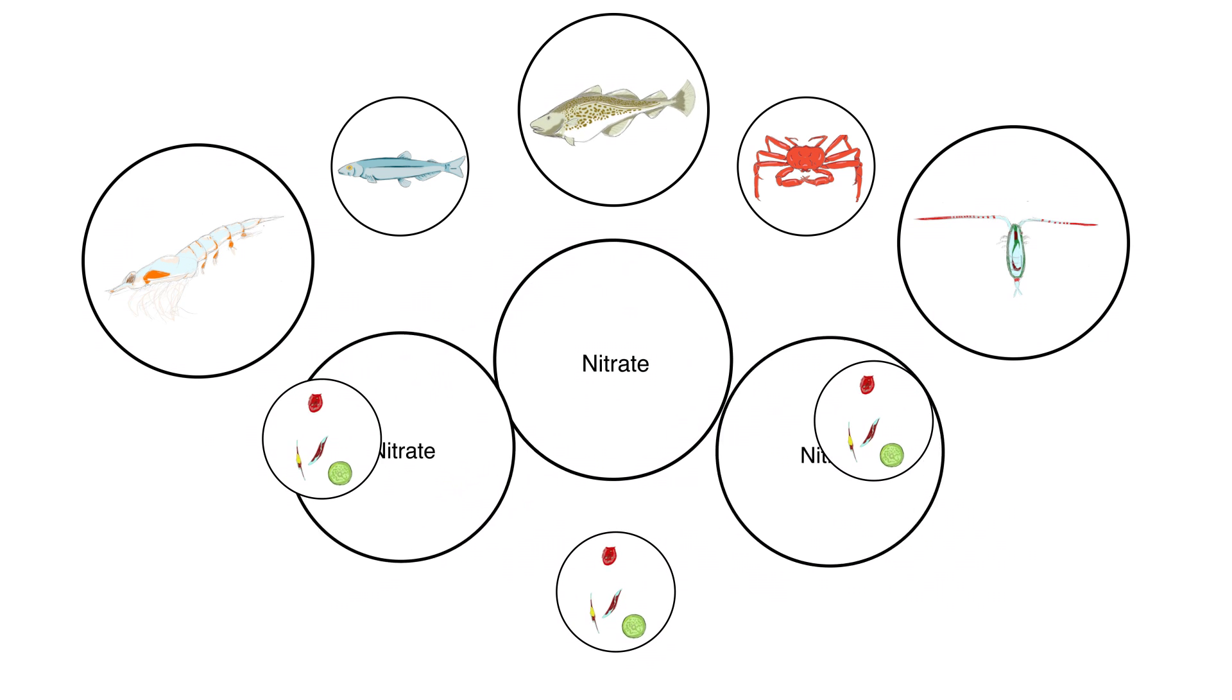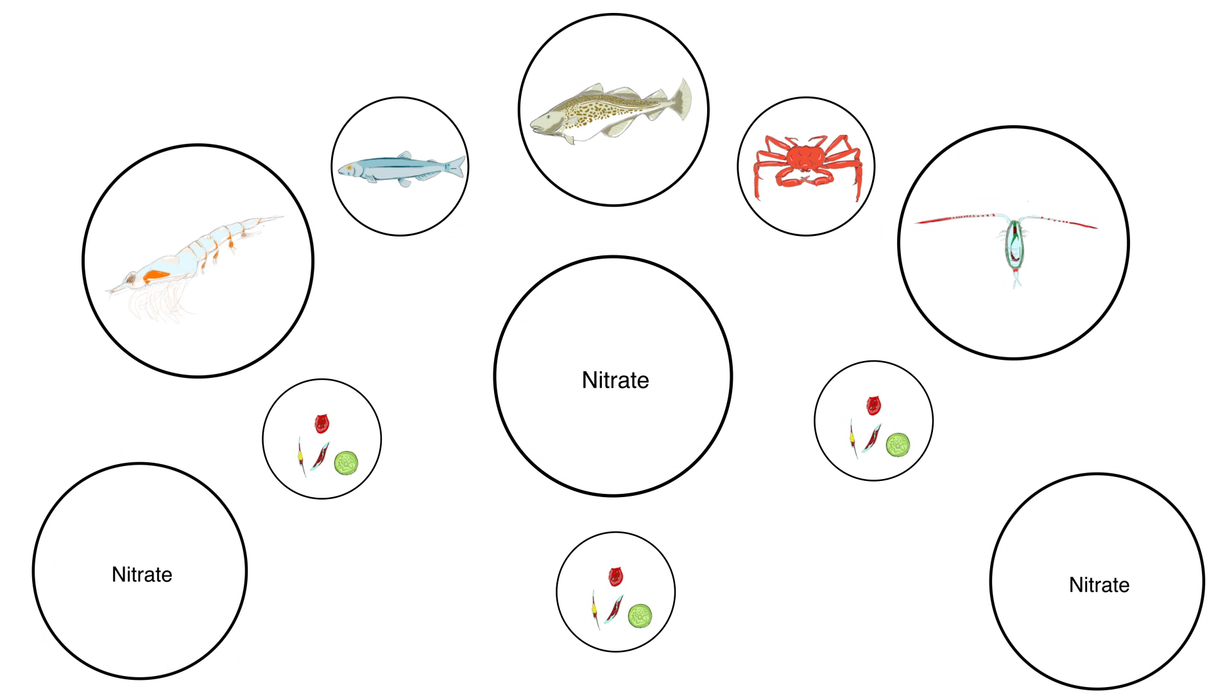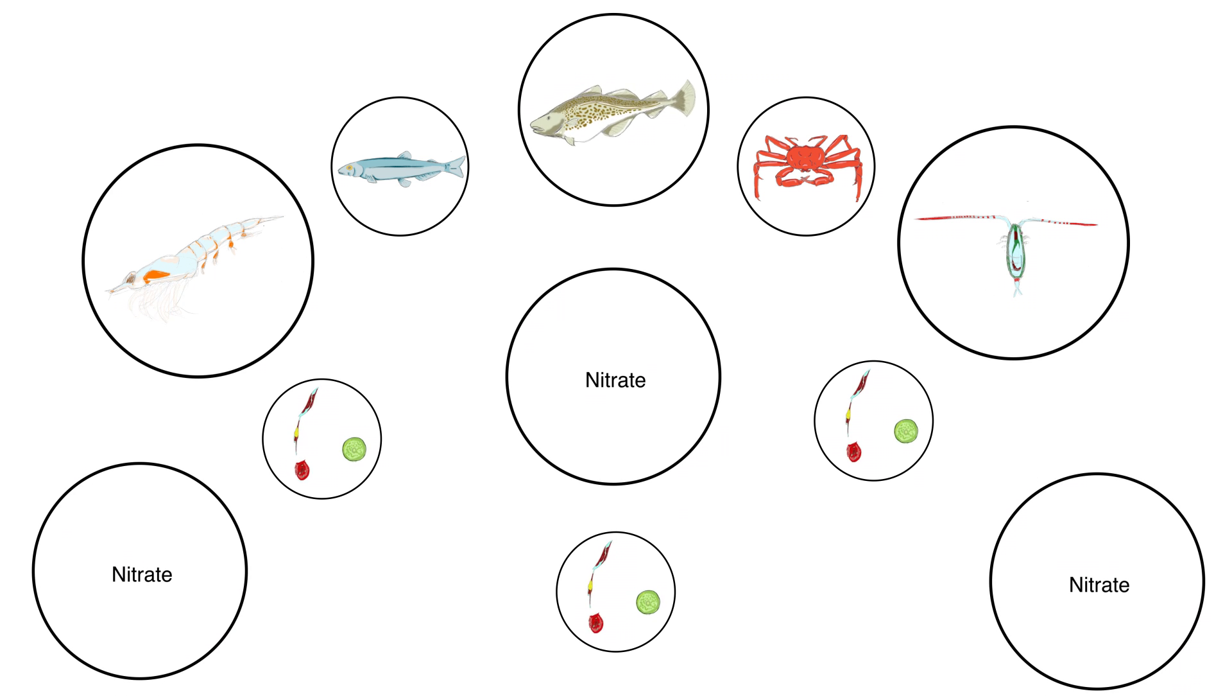This influence ensured that the lower trophic levels were balanced and supported. Small fish had plenty of zooplankton to eat, and the zooplankton in turn controlled the phytoplankton population. This delicate give and take ensured plentiful nitrate to support the entire system from the floor up.